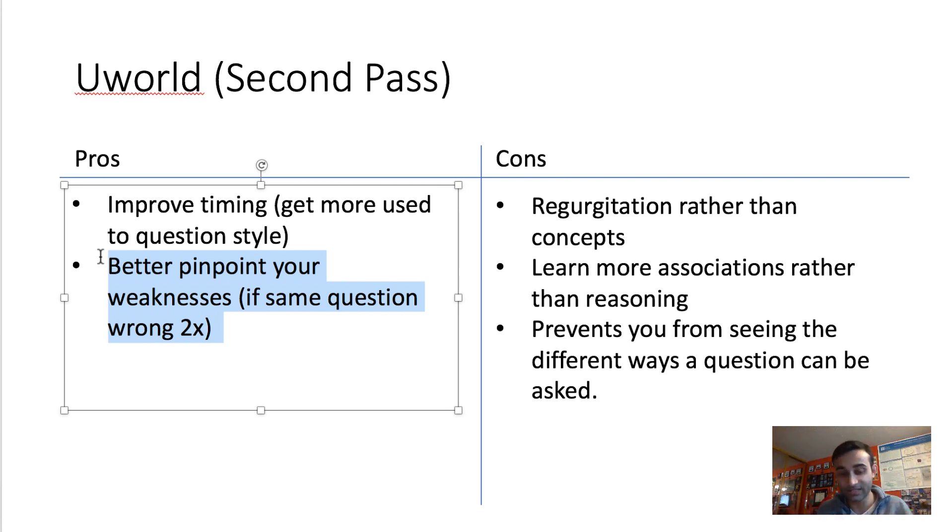The other benefit of doing UWorld twice is you will be better able to pinpoint your weaknesses. UWorld has an amazing interface and it tells you exactly the number of questions you got wrong in each subject. So if you do UWorld twice, and let's say you get a question wrong twice about renal membranous nephropathy, then you know that you need to go back and review membranous nephropathy. Because if you get that same question wrong twice, you clearly don't understand it.